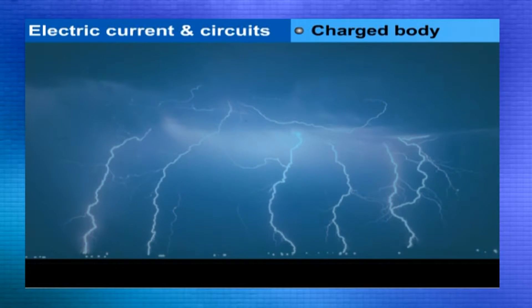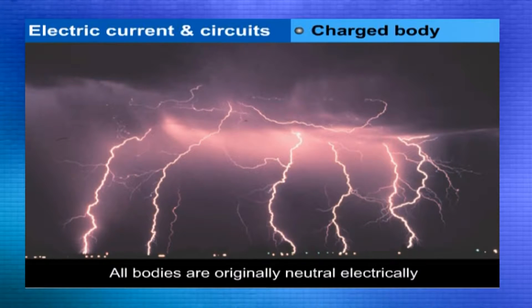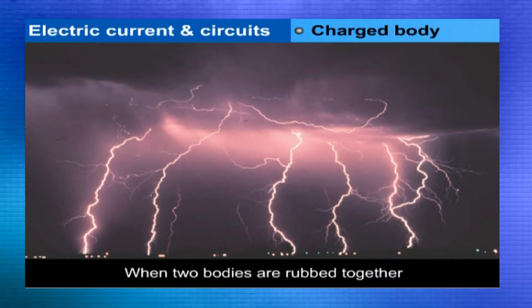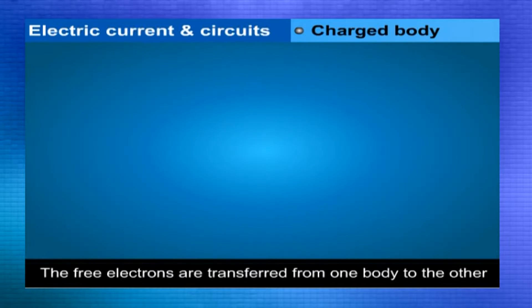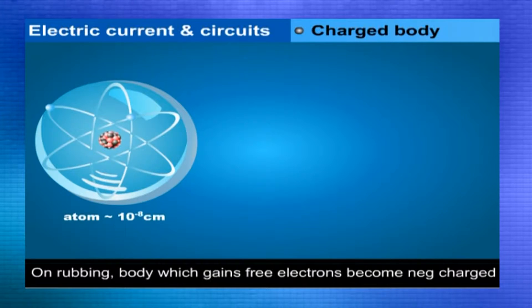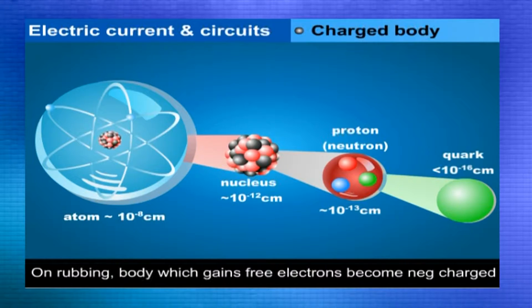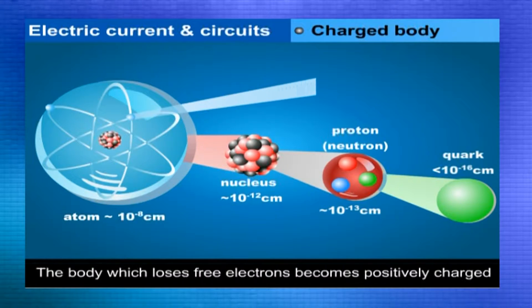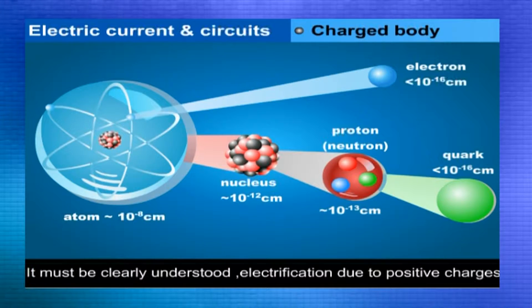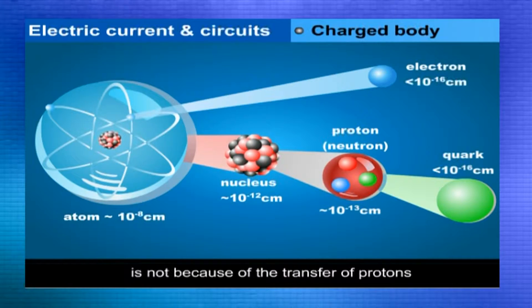Charged body in terms of transfer of electrons. The bodies are originally neutral electrically. When two bodies are rubbed together, the free electrons are transferred from one body to the other. On rubbing, the body which gains free electrons becomes negatively charged and the body which loses free electrons becomes positively charged. It must be clearly understood that the electrification due to positive charges is not because of the transfer of protons, but it is due to the deficiency of electrons.